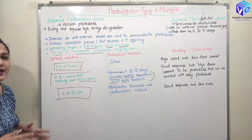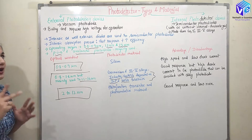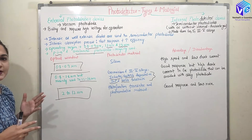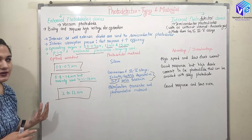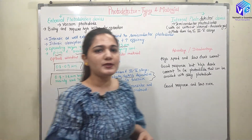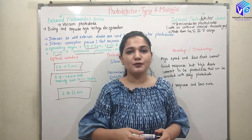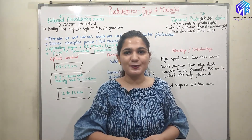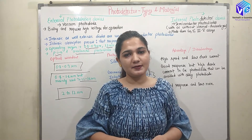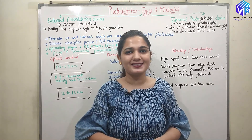I hope you understood all the types of photodetectors in detail — both types, the basic differences between them, and the basic materials used according to the different wavelengths. If you have any doubt in any of the topics discussed, you can put your question in the comments and I will reply as soon as possible. I hope you liked this session. If you did, please push the like button, subscribe to the channel, share it with your friends, and give me your feedback. Thank you so much.